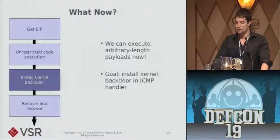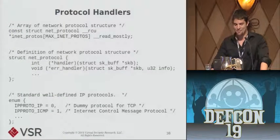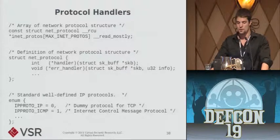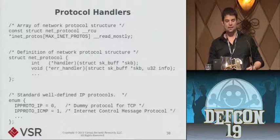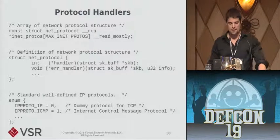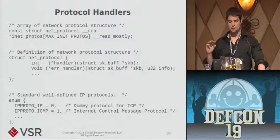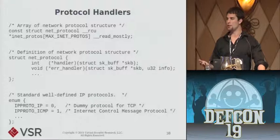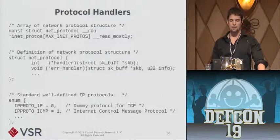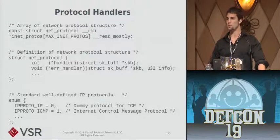Now we've overcome our space constraint — we can execute arbitrary-length payloads running in kernel mode. The goal is to install a kernel backdoor in the ICMP handler. There's this global array at a known location called the inet_protos array, which is an array of pointers to net_protocol structures — one for each IP protocol like TCP, UDP, and ICMP. The first member of this net_protocol structure is a handler function pointer that gets called when the kernel receives data for that protocol. So if we can overwrite that function pointer for the ICMP protocol, then whenever we receive ICMP data it will call into our code.